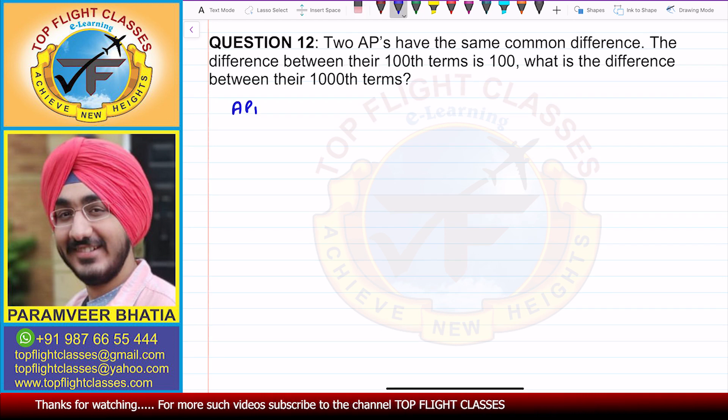let us say that we have two APs, AP1 and AP2. Now AP1 terms are of the form A1, A2, A3 and so on. AP2 terms are of the form B1, B2, B3 and so on.